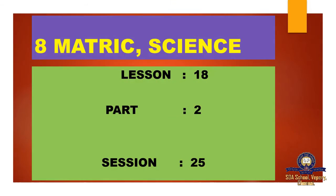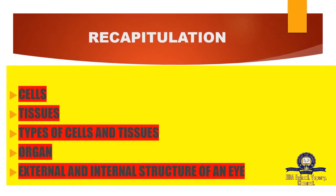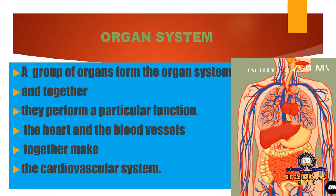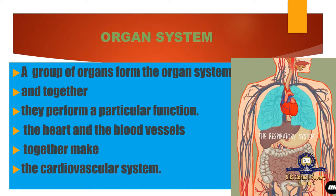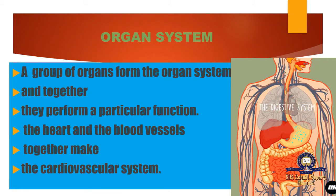Good morning children, welcome back to our science class. We are in lesson 18, part 2, video session 25. In our last class we studied about cells, tissues, types of cells and tissues, organs, and the external and internal structure of an eye. Today we look at organ systems — a group of organs that work together. In our body we have many organ systems, for example the digestive system, respiratory system, and circulatory system. These groups of internal organs work together to perform a particular function.